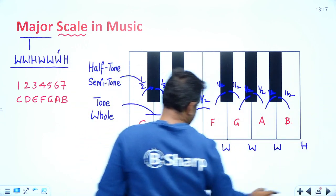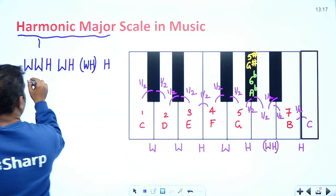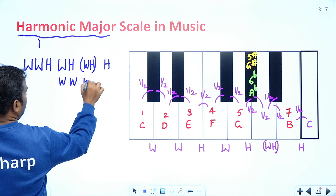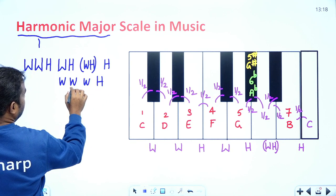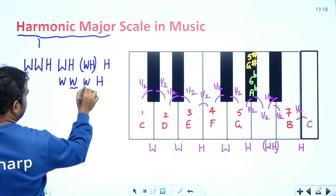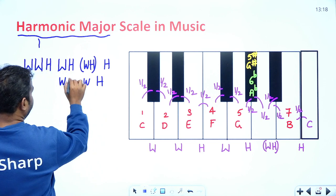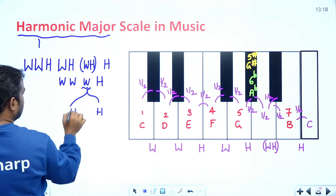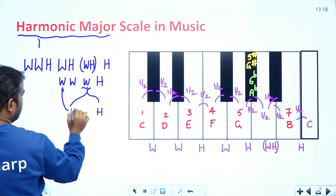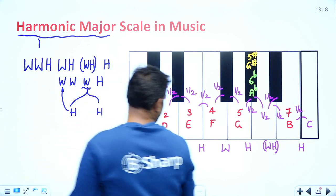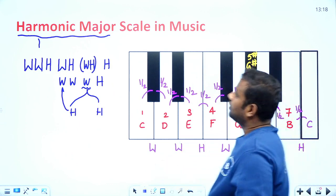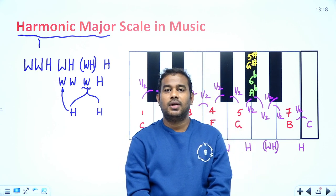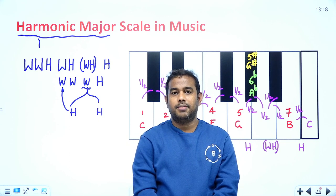In the major scale, one whole step is converted into two halves in the harmonic major scale — one half is placed before and another after. That is the essential distinction of the harmonic major scale. I hope you understood. Please subscribe to my YouTube channel and press the like button.